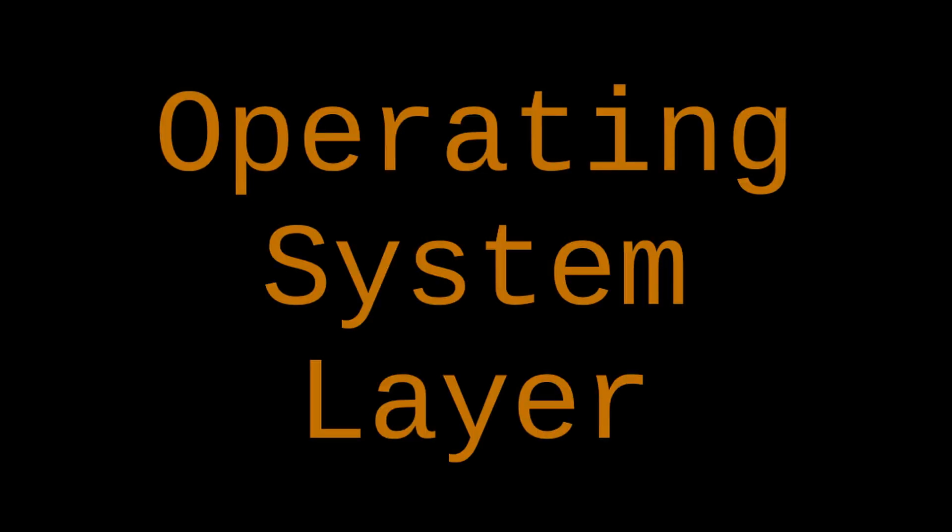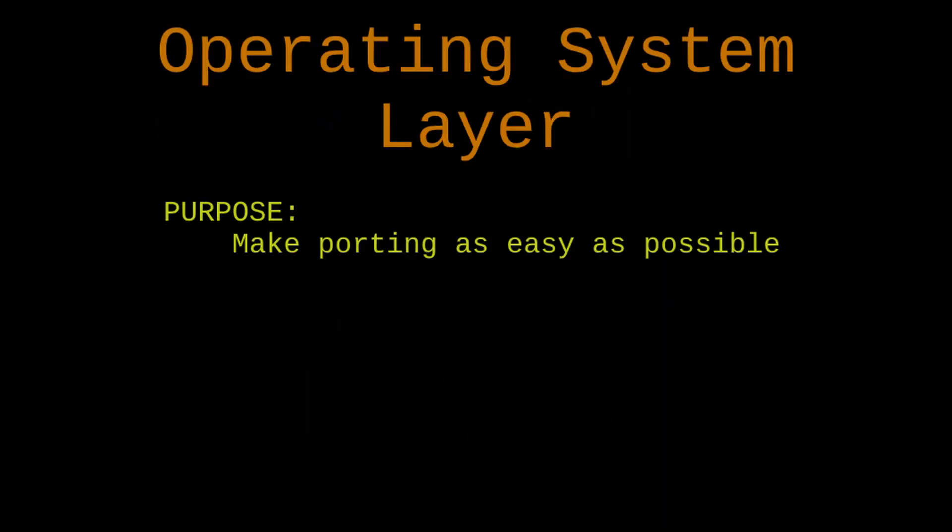We're starting on the second module of the series. In this module I'm going to focus on starting the operating system layer. The purpose of the operating system layer is to make future porting as easy as possible, and all the decisions I make about what goes into this layer and how it gets organized will be in service of that goal.